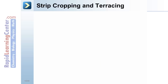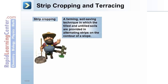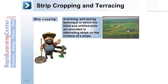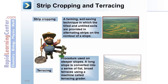Strip cropping and terracing are soil-saving farming techniques in which tilled and untilled soils are provided in alternating strips on the contour of a slope. Terracing is a procedure used on steeper slopes where a long slope is converted into a series of flat, broad terraces using a machine called a terracing grader.